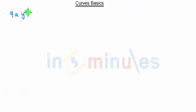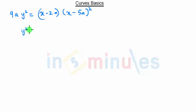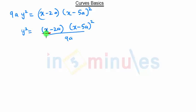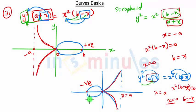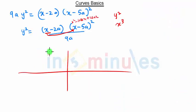Now we have 9ay² = x(x − 2a)(x − 5a)². We can write this as y² = x(x − 2a)² / 9a. When we expand, we get x² − 10ax + 25a², and x times x gives x³. So this equation is quadratic in y and cubic in x, similar to the previous curve. However, here we do not have any asymptote.